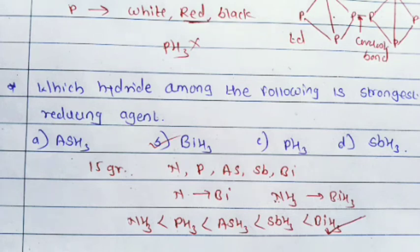So out of these four, BiH₃ is the strongest reducing agent. The order is NH₃ < PH₃ < AsH₃ < SbH₃ < BiH₃. These are some inorganic questions asked in MHT-CET 2019 question paper. Thank you so much.